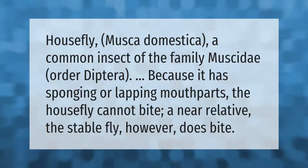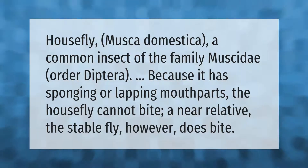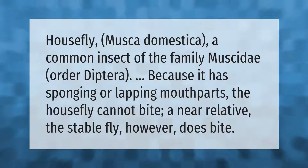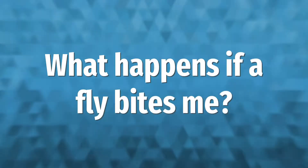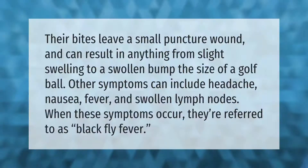The housefly, Musca domestica, is a common insect of the family Muscidae, order Diptera. Because it has sponging or lapping mouthparts, the housefly cannot bite. A near relative, the stable fly, however, does bite.